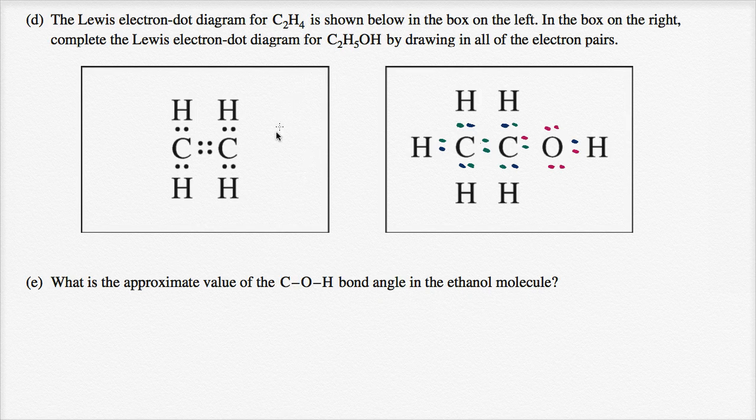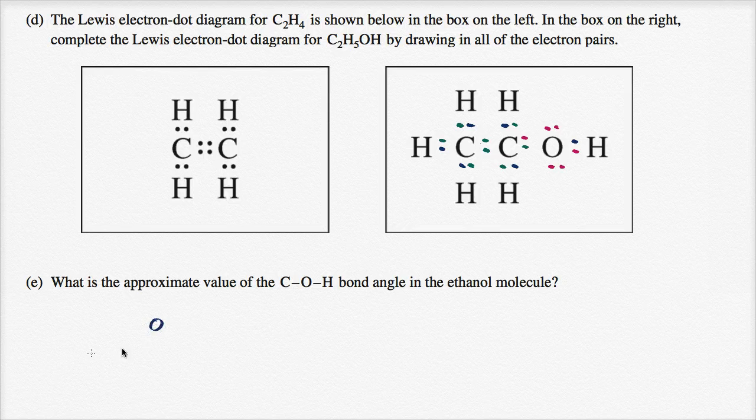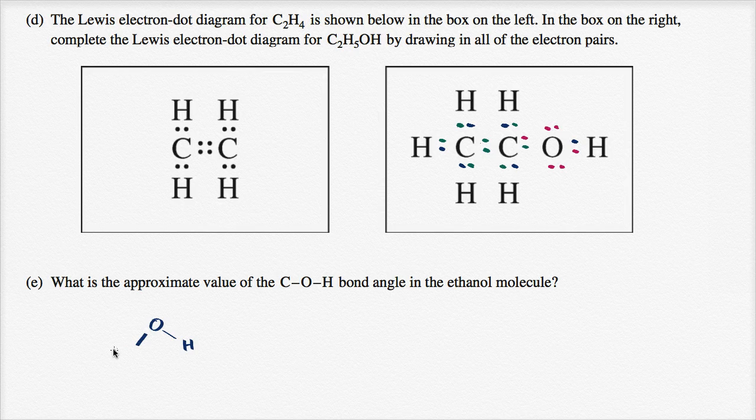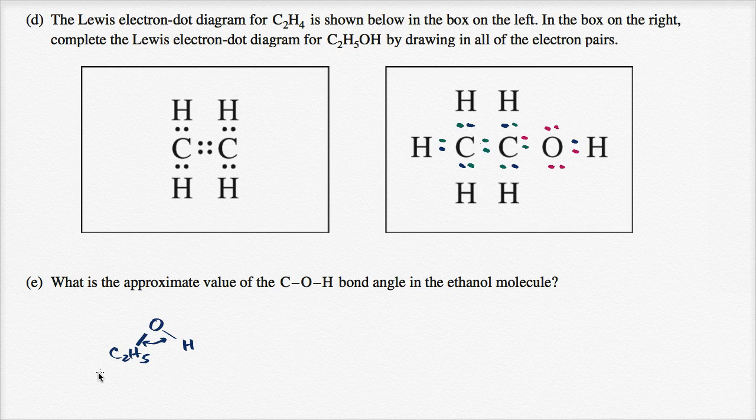What is the approximate value of the carbon-oxygen-hydrogen bond angle in the ethanol molecule? So the ethanol molecule, they want to know the bond angle. You have the oxygen bonded to a hydrogen bonded to the C2H5. And they want to know what is approximately this bond angle going to be.